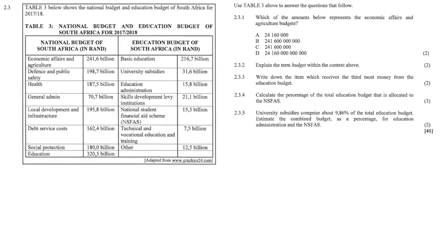Question 2.3: Table 3 below shows the national budget and education budget of South Africa for the 2017-2018 year. All of that information is in Table 3. Let's jump into the required questions — I always like to start with the questions first. Question 2.3.1: which of the amounts below represents the economic affairs and agriculture budgets?